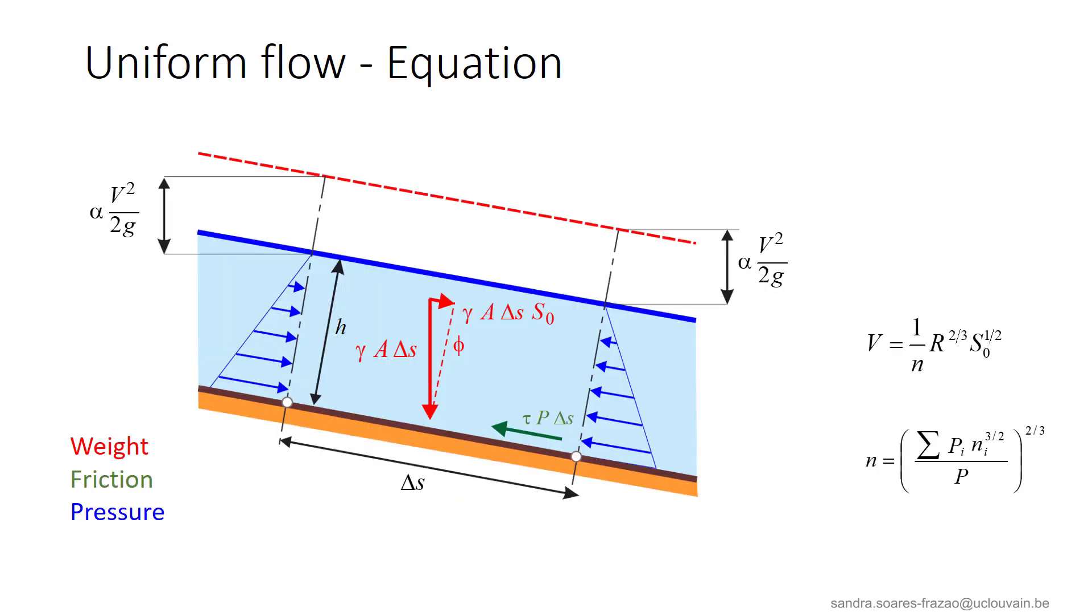As a summary, the uniform flow equation is obtained after a balance of the forces exerted on a portion of the flow. The resulting equation allows to calculate the flow velocity in a prismatic channel with a given slope S0 and a given friction coefficient N, knowing the hydraulic radius that depends on the shape of the cross-section and on the water depth. The equivalent Manning coefficient for a heterogeneous cross-section can be determined using the Einstein equation here. And with this, we finish this lesson. We will see in the next one how to calculate the uniform depth in practical cases. Goodbye!